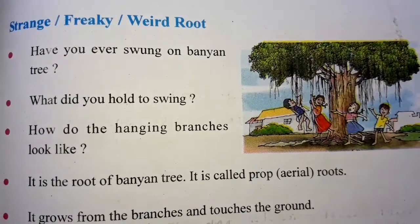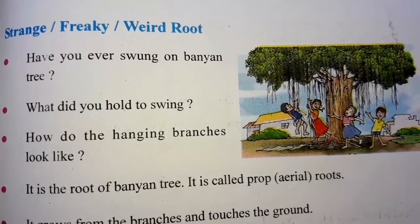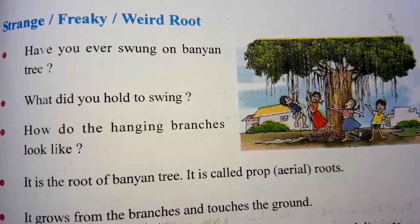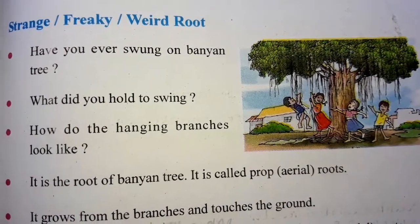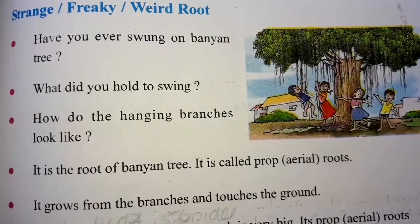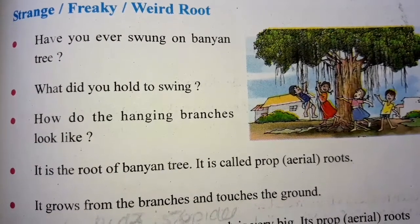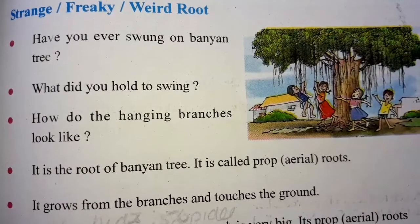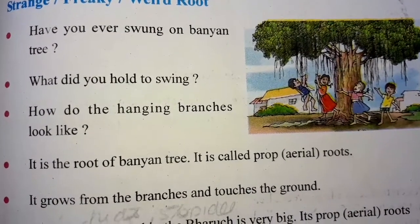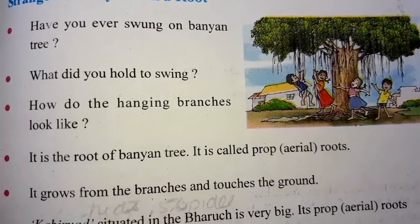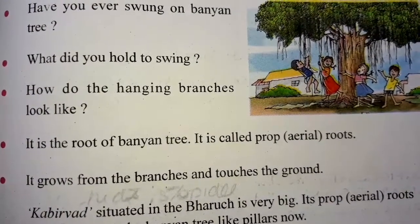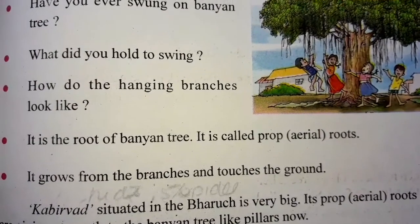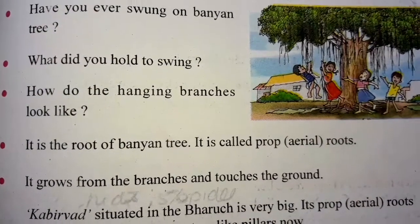What did you hold to swing? Ta aap ne us pe jhula jhulne ke liye kya pakda hai? So, roots — we are holding the roots, that is aerial roots. How do the hanging branches look like? Actually, they are roots, but they look like branches because they are coming from the top. It is a root of banyan tree. It is called prop roots, yani ki aerial roots.